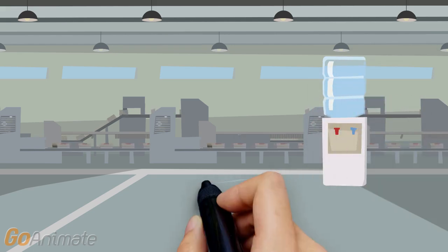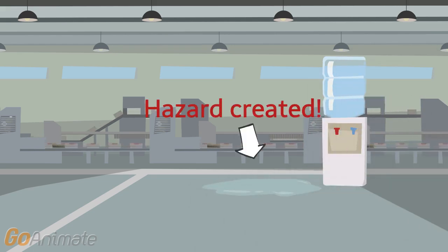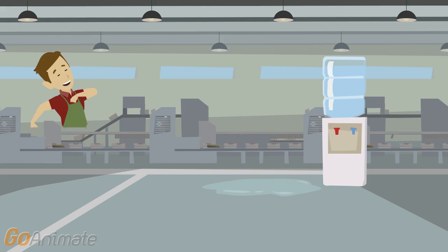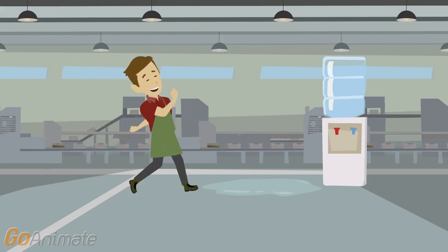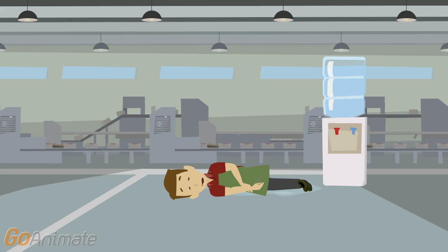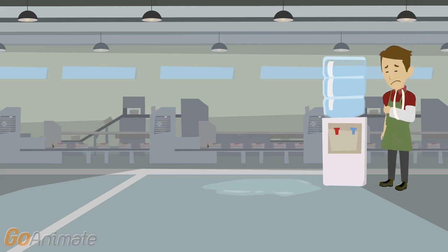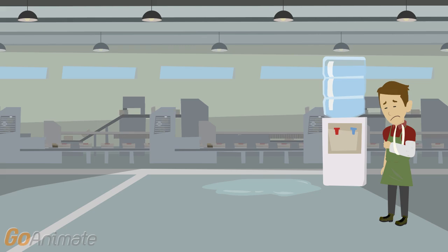Let us look at a simple example. Our water cooler on the floor has a leak, which has created a puddle on the floor — this is now a slip hazard. If we do not remove or control this hazard, there is a significant risk that someone may slip and injure themselves.